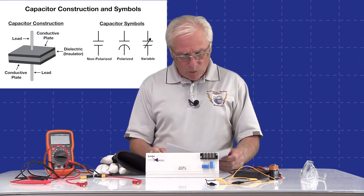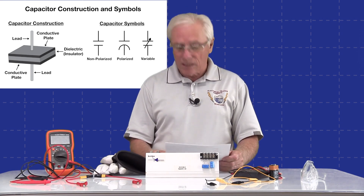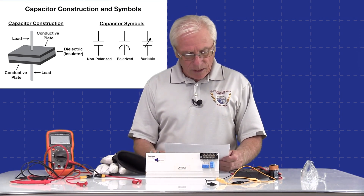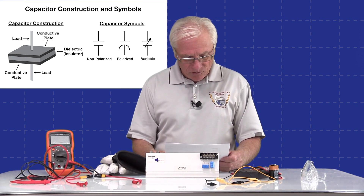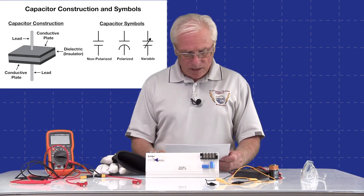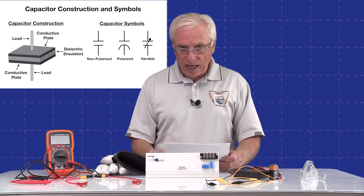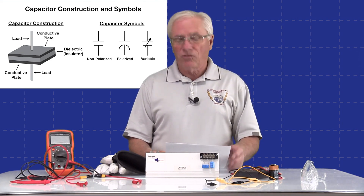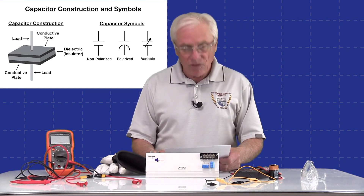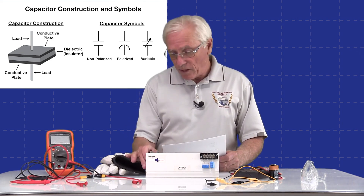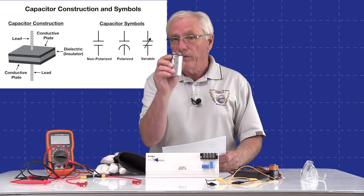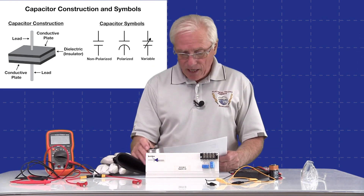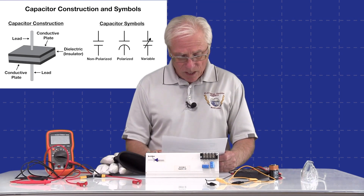You can see on the board that we have capacitor constructions and symbols. The capacitor construction, when you look at it, has two plates which are conductive, and they're separated by a dielectric. Connected to the plates on this capacitor are leads, and on this one you can see we have terminals on the top. These are connected to the plates within the capacitor, and it really is pretty basic construction.